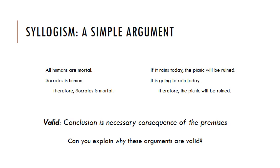Another one: If it rains today, the picnic will be ruined. It is going to rain today. Therefore, the picnic will be ruined. These are valid arguments — good arguments — because the conclusion has to follow from the premises. If these premises are true, then the conclusion is also necessarily true.